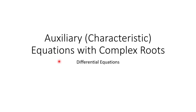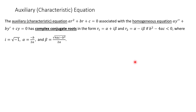Hi everyone. In this video we're going to be talking about our auxiliary or characteristic equations, but the ones that have complex roots. We previously talked about our linear second order differential equation and its roots for its auxiliary equation. This time the new part is that the roots are going to be complex. So our auxiliary characteristic equation ar² + br + c = 0, which is associated with our homogeneous equation.